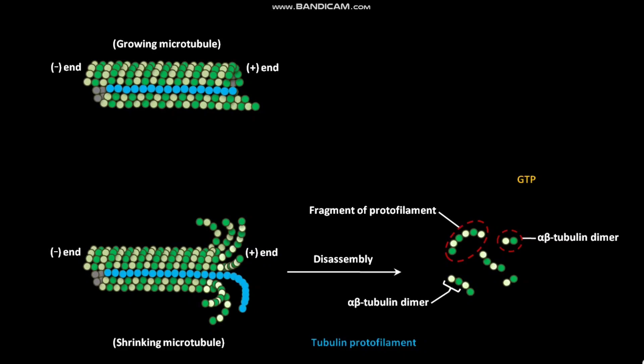The beta tubulins in both fragments of protofilament and alpha-beta tubulin dimers are bound to GDP, so the beta tubulin in both is called GDP-beta tubulin. The GDP bound to beta tubulin of both fragments of protofilament and alpha-beta tubulin dimers then dissociates. GTP then binds to the beta tubulin of both fragments of protofilament and alpha-beta tubulin dimers.